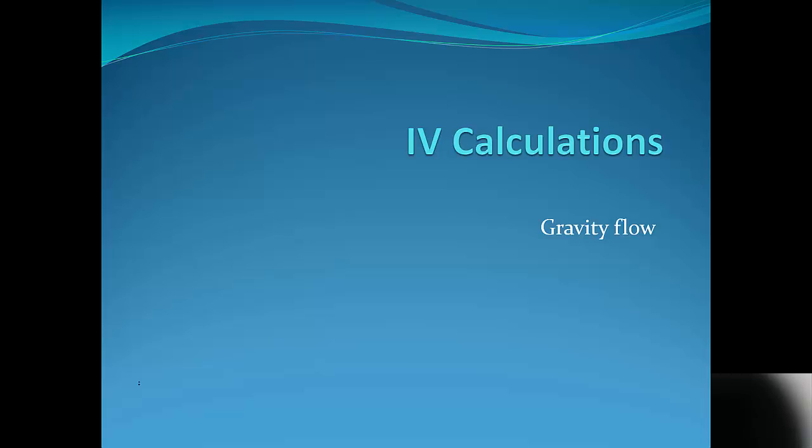We're going to look at completing the calculations to run an IV by gravity flow. When we're running an IV with gravity flow, we want to find drops per minute so that we can time that with our watch and count the drops in the drip chamber. We also want to round to a whole number so that we have something that is countable.